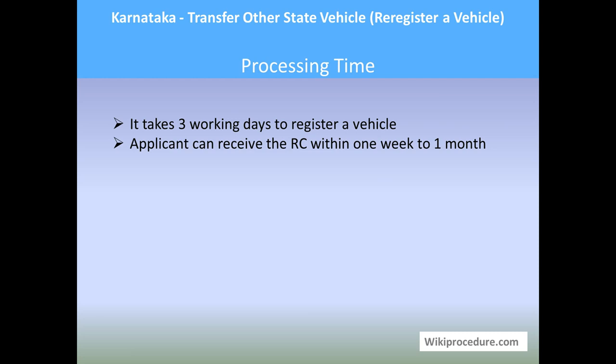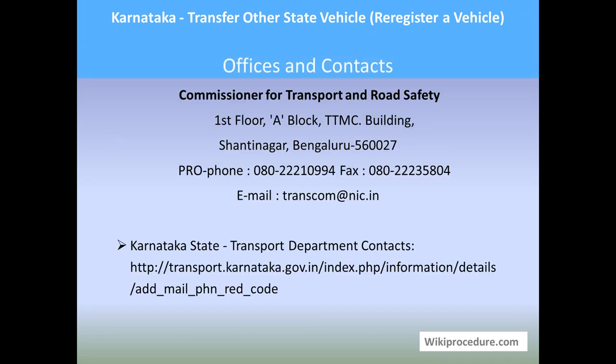Processing time: it takes three working days to get a registered vehicle. The applicant can receive the RC within one week to one month. Offices and contact: Commissioner for Transport and Road Safety, TTMC Buildings, Shantinagar, Bengaluru-27. Further contact details are provided here for your verification. The link provided will give access to the contact page to find your local RTO address.